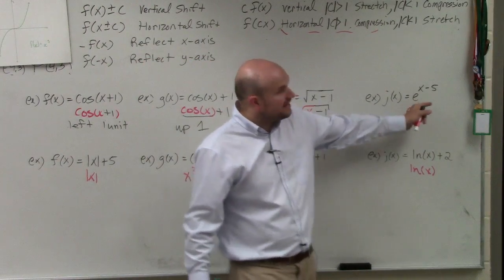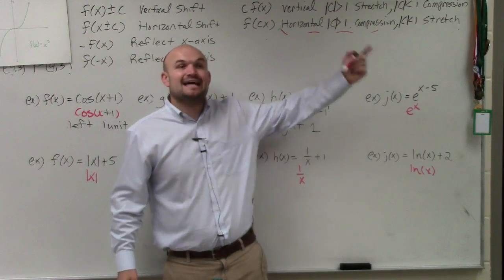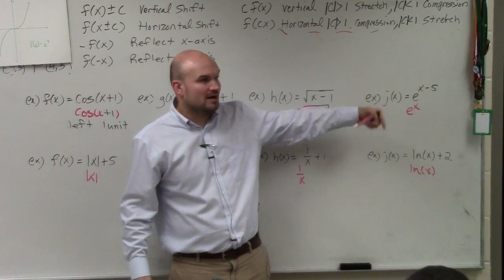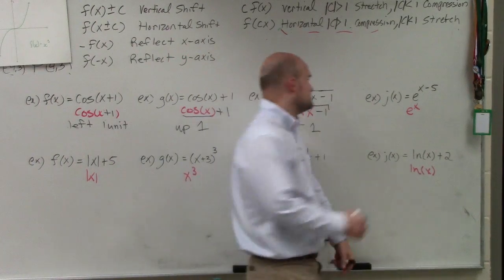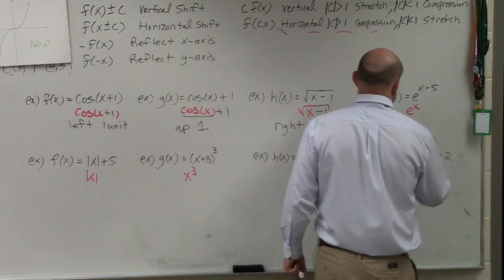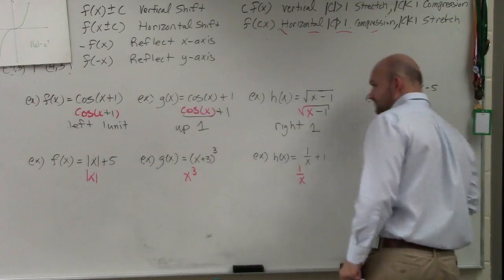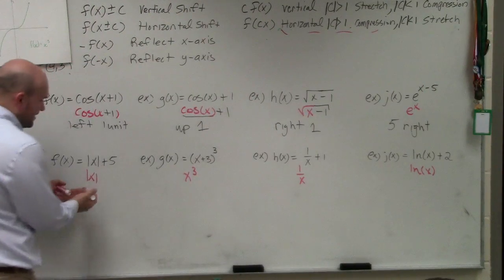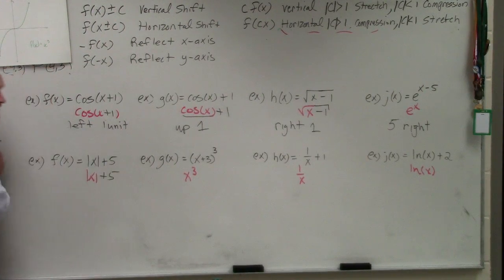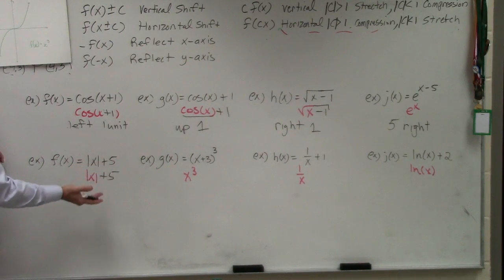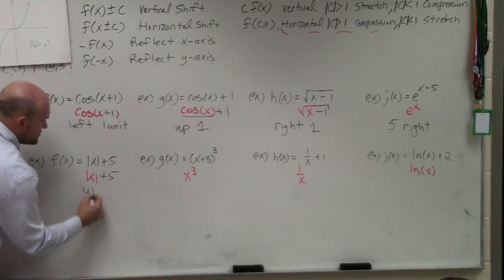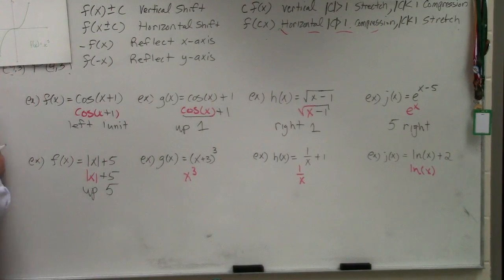Over here, you can see I'm subtracting the five in the exponent. So therefore, I'm going to be shifting five units to the right. Over here, all I'm simply doing is adding the five outside the function. Absolute value of x is still the function, it's just being added five. So therefore, that's shifting the graph up five units.